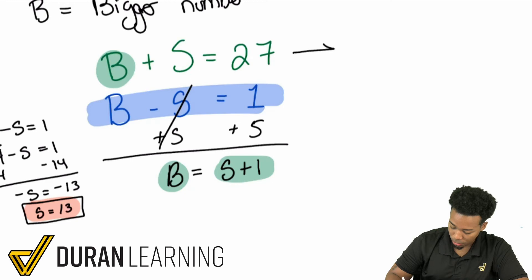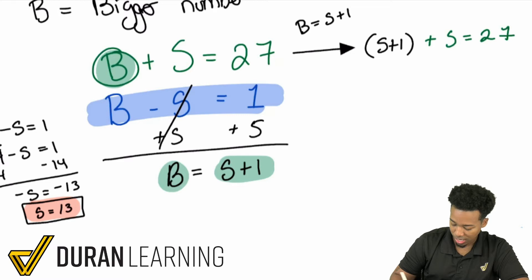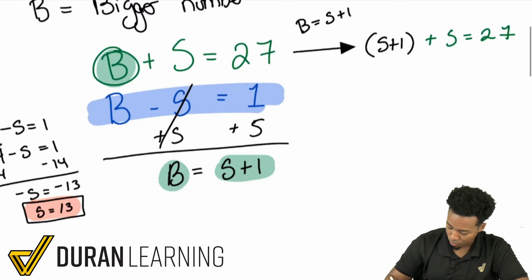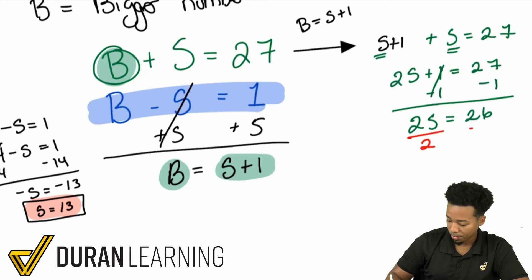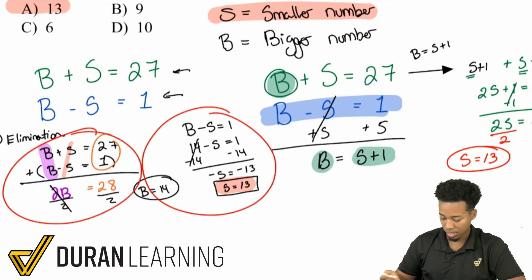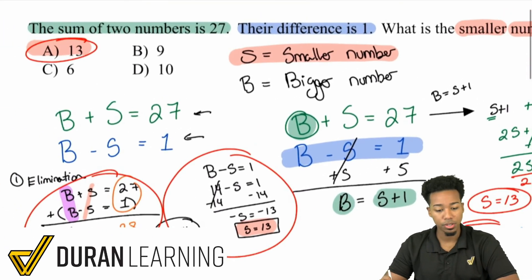Substituting B equals S plus 1 into S plus B equals 27 gives us S plus (S plus 1) equals 27. That simplifies to 2S plus 1 equals 27. Subtract 1 from both sides: 2S equals 26. Divide both sides by 2: S equals 13. Much faster than elimination — same answer, and we're good.